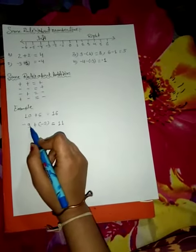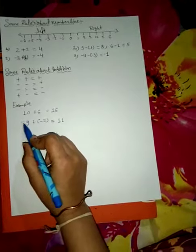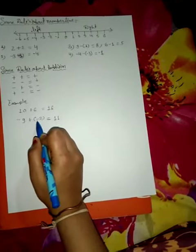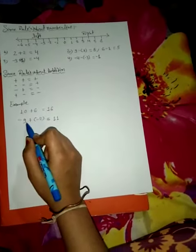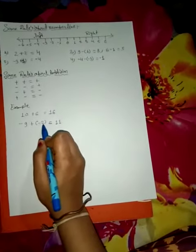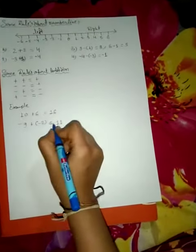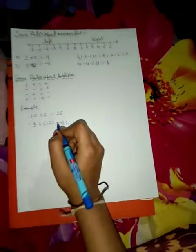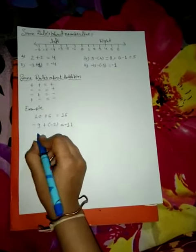We use the big digit number's sign. That is, 9 is a negative number and 2 is also negative, but 9 is a bigger digit and 2 is smaller, so we put a negative sign.